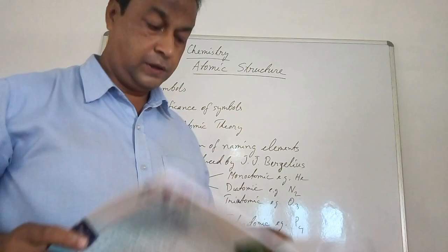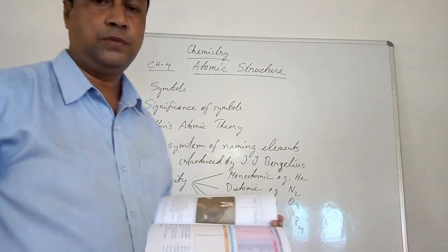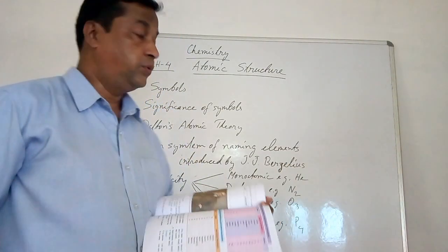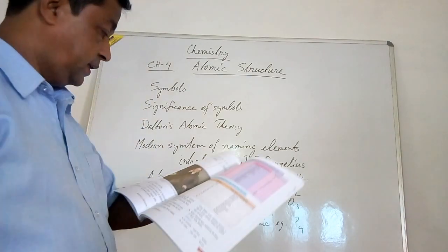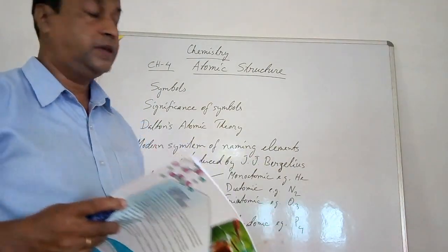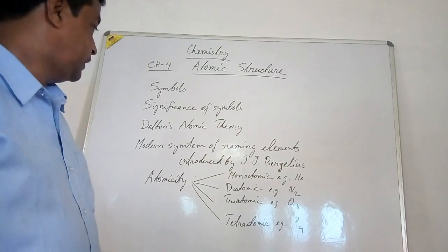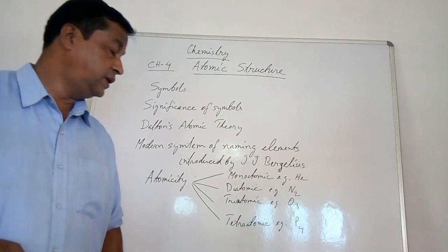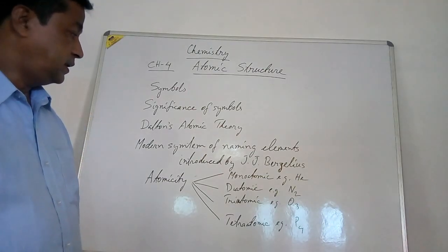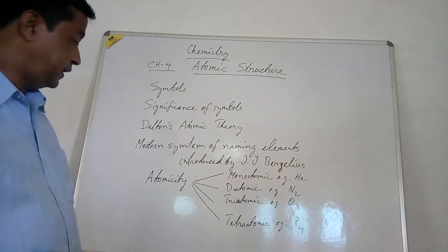Hello students, today we will be teaching chemistry from chapter 4, Atomic Structure. The next topics are about the significance of symbols, Dalton's atomic theory, the modern system of naming elements introduced by JJ Virgilius, and atomicity.